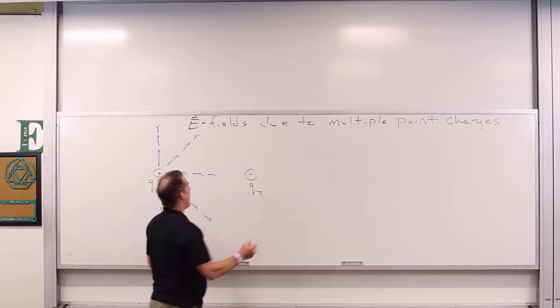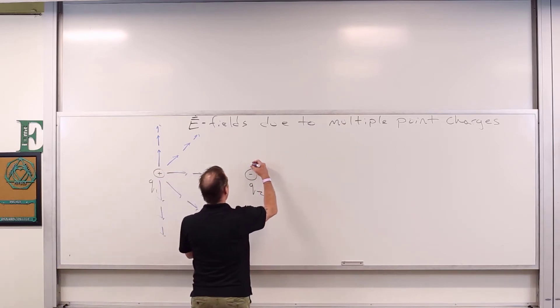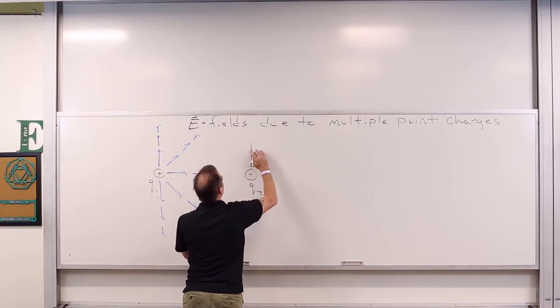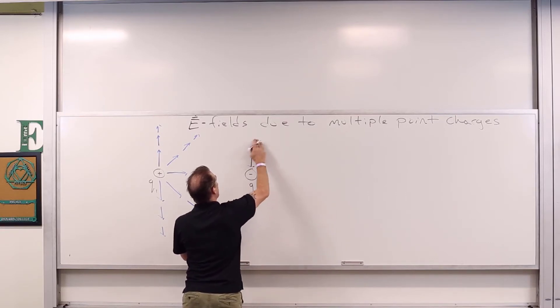The negative charge has radially inward directed vectors. This one should be longer.